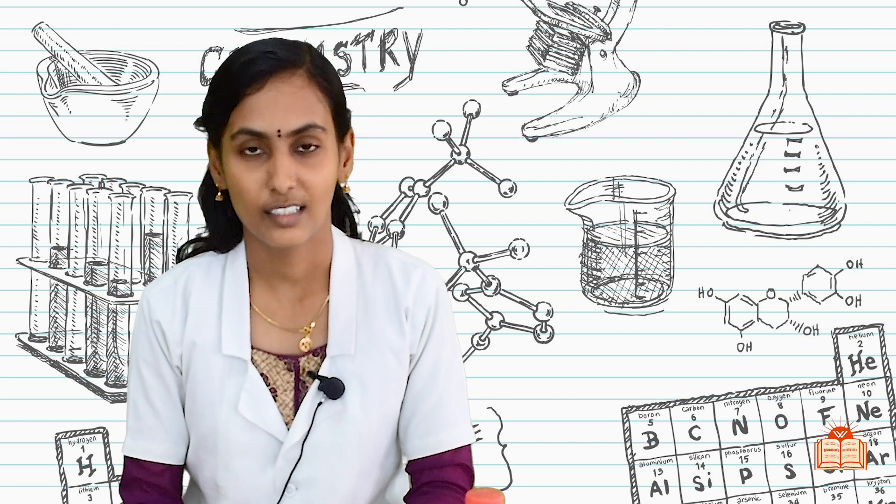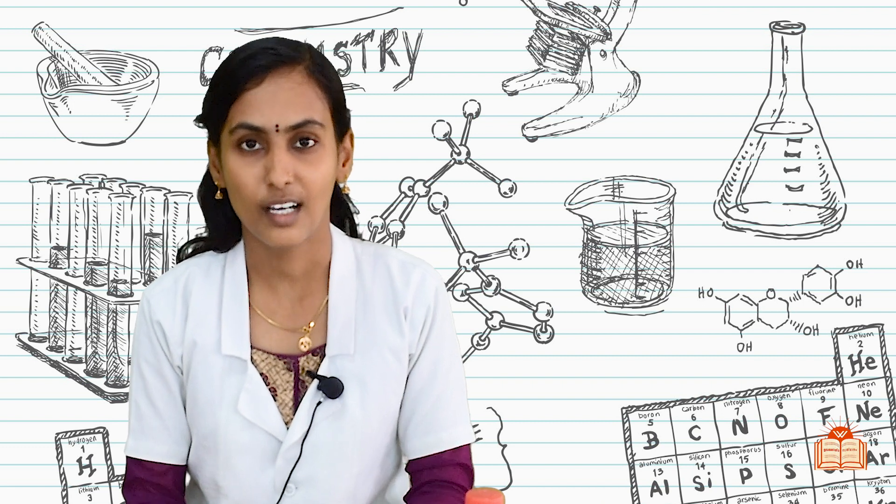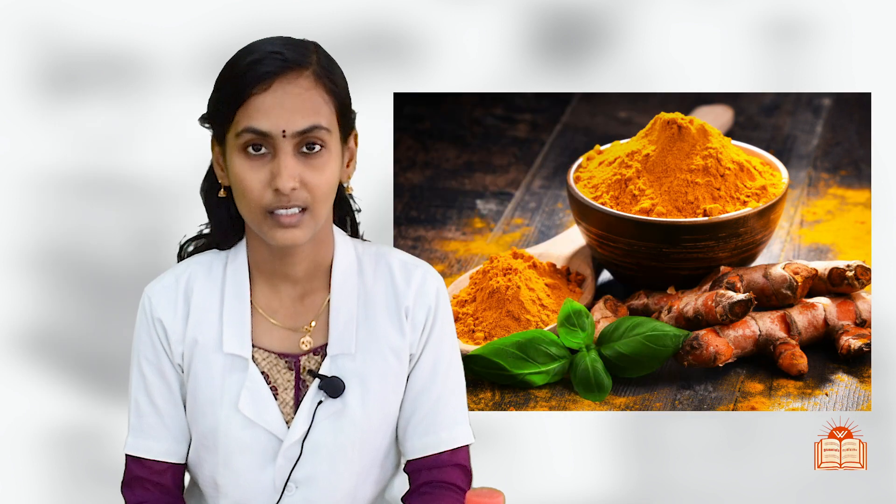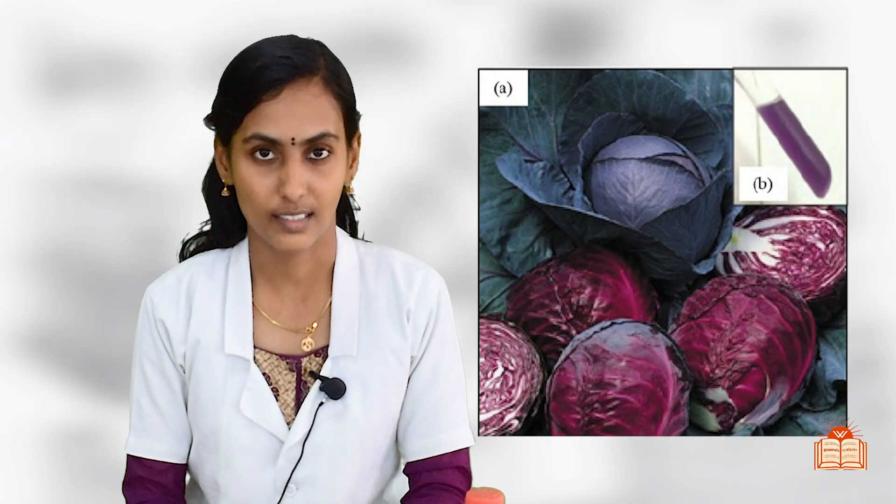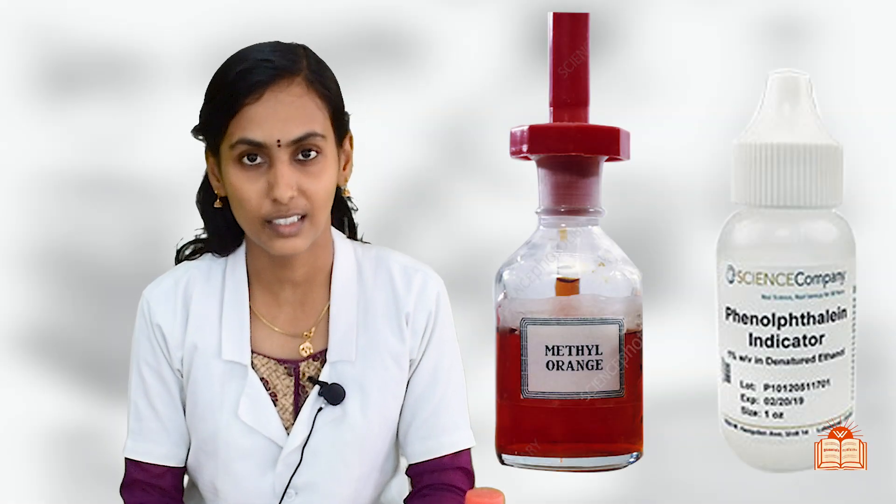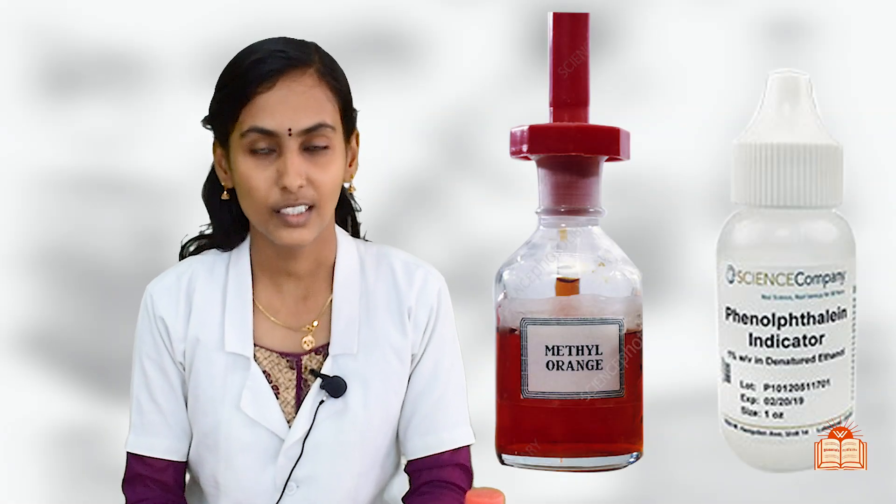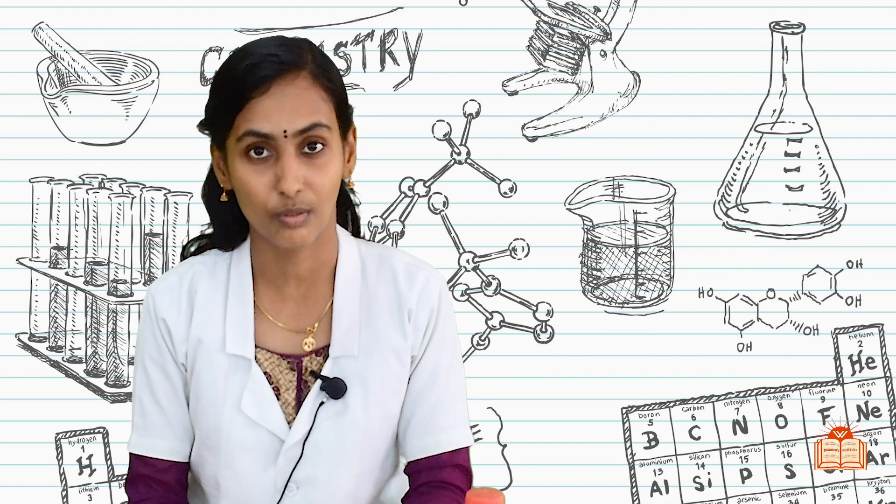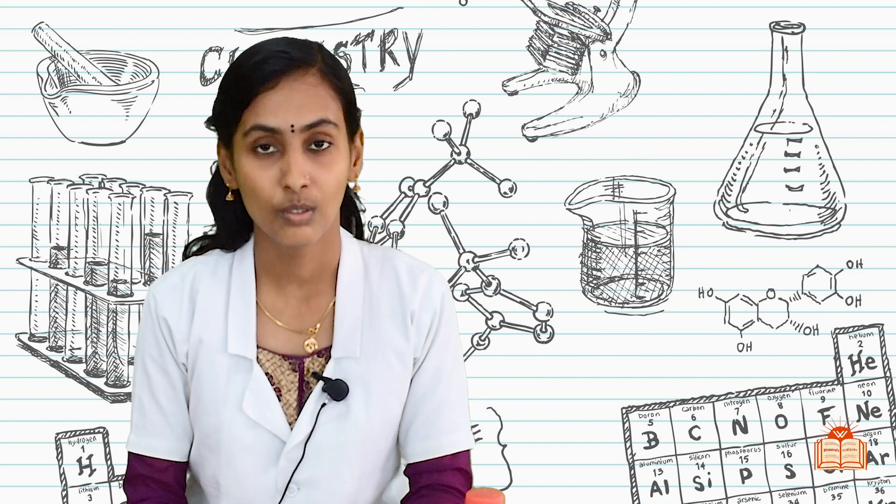Natural indicators are there, artificial indicators are there. Natural indicators examples are litmus, turmeric, red cabbage extract. In the case of synthetic indicators, phenolphthalein and methyl orange are the main examples. Using these indicators we can identify whether the substance is acid or base, but we do not know what is the strength of these acid and base.